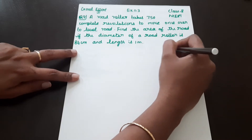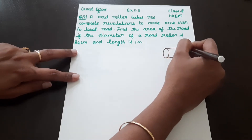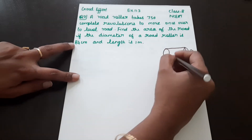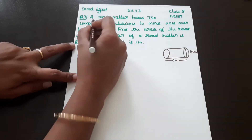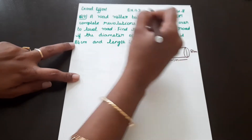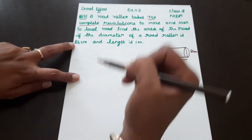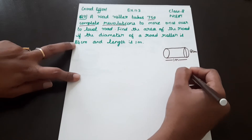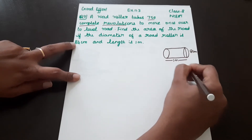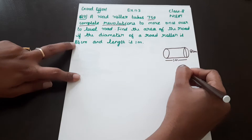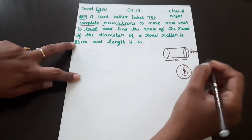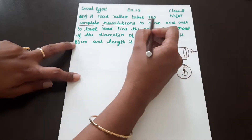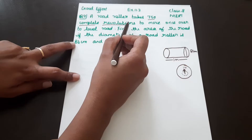The road roller is in the cylindrical shape. It takes 750 revolutions to move once over to level the road. One revolution means one complete round — similar to how a clock completes a cycle.